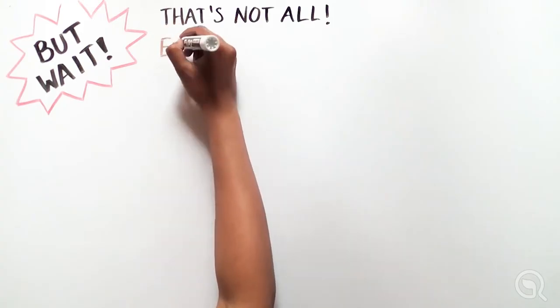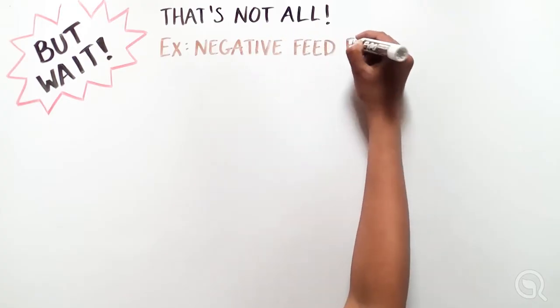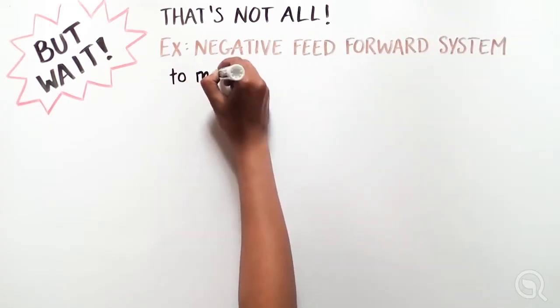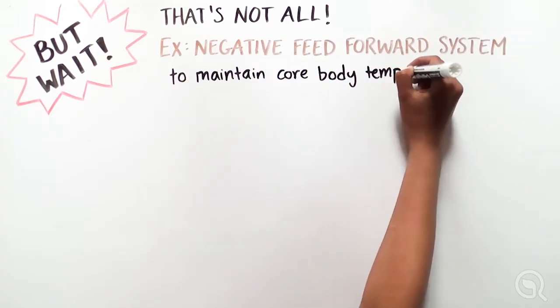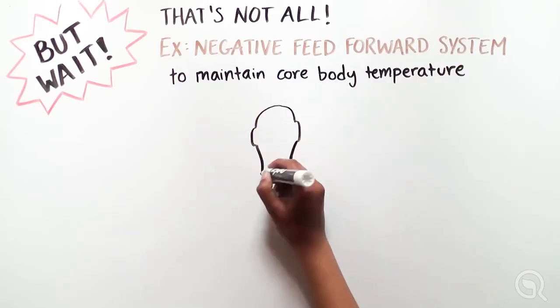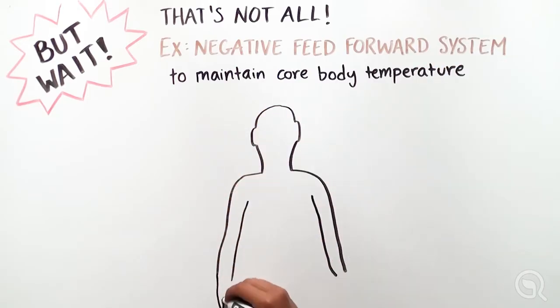For example, a negative feed-forward system. Here, the body is able to anticipate when a change is about to take place, and make adjustments in advance to avoid large imbalances.